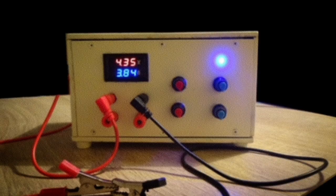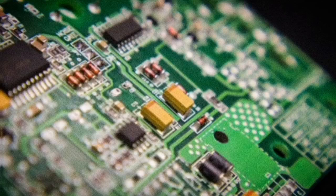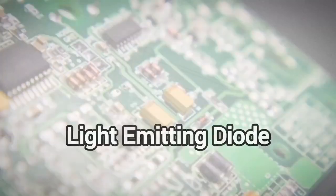Diodes are used in power supplies, battery chargers, and even LED lights. They're essential for converting alternating current, or AC, to direct current, or DC, and keeping circuits safe and stable.